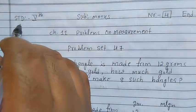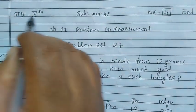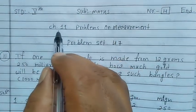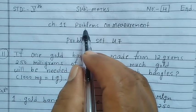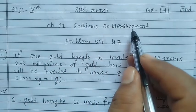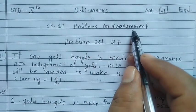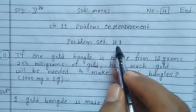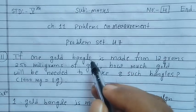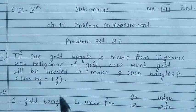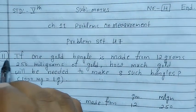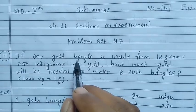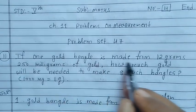Hello children, today we are going to learn Standard 5th subject Math, Chapter 11: Problems on Measurement. We will do Problem Set 47, continuing with word problems. Question 11: If one gold bangle is made from 12 grams 250 milligrams of gold, how much gold will be needed to make eight such bangles?